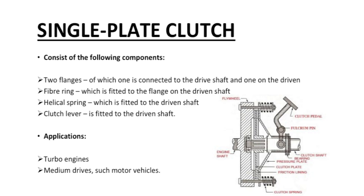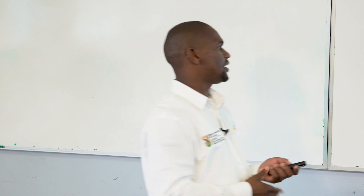Single plate clutch components: it has two flanges, which are connected to the drive shaft and the driven shaft. We have a fiber ring, which is fitted to the flange on the driven shaft. We have a helical spring, fitted to the driven shaft. And we have a clutch lever, fitted to the driven shaft. Applications: found on table engines and medium drives such as motor vehicles.